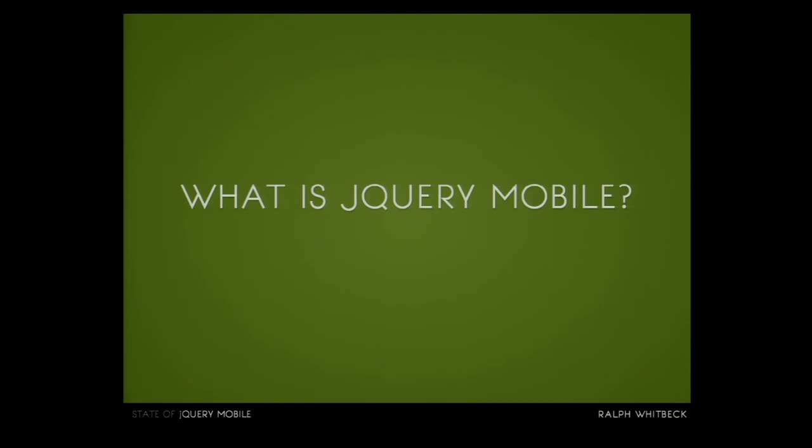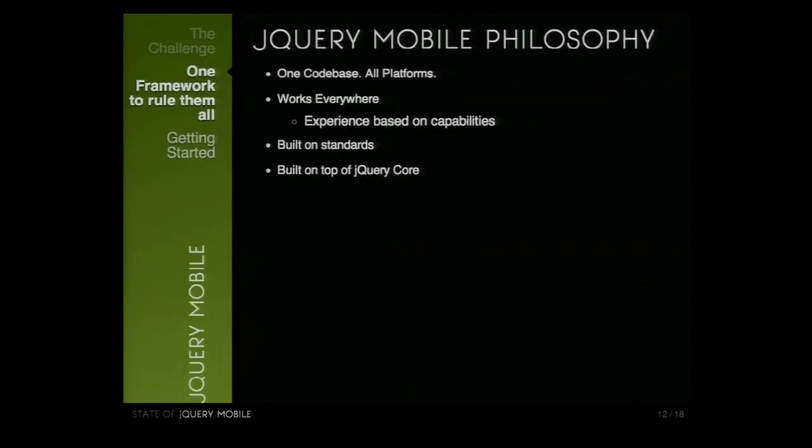Mobile is still the web. People are accessing websites on their phones and they want that to work as they expect on the desktop. They don't want a mobile version or anything else — they want the exact same experience on their phone that they're going to have on the desktop. So let's explore what jQuery Mobile is. Our philosophy is we want one code base that works across all platforms, works everywhere, and the experience is based on the capabilities of the device. It's all built on top of standards — HTML5 and CSS3 — and it's built on top of jQuery core and jQuery UI.